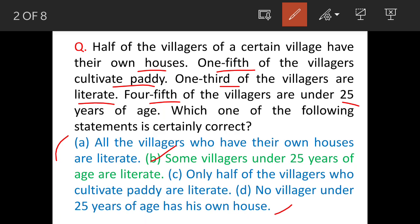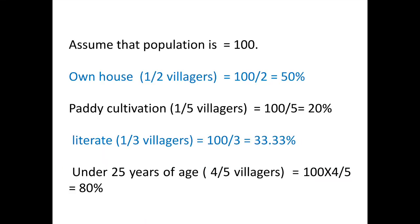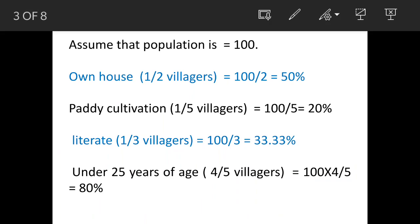We will see how to solve this question. This question can actually be solved mentally, but for the sake of understanding I will solve it in detail. Since we have to work out various combinations, we will first work out the percentage of villagers in various categories. Let's assume that the population is 100.